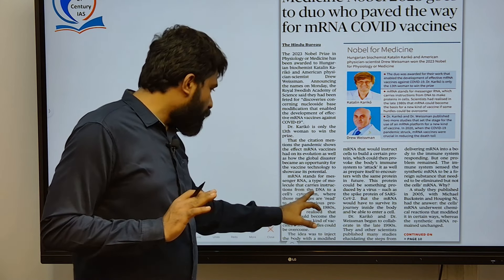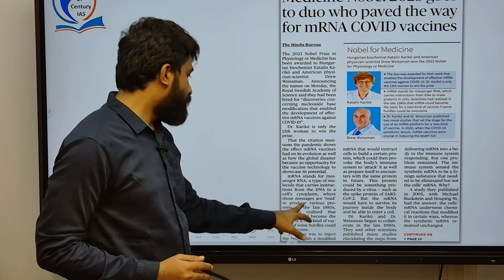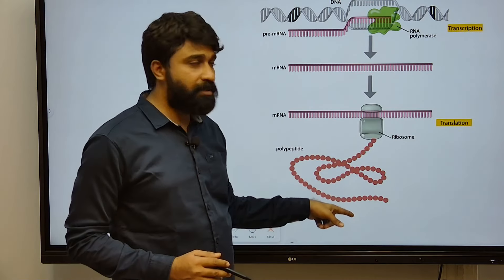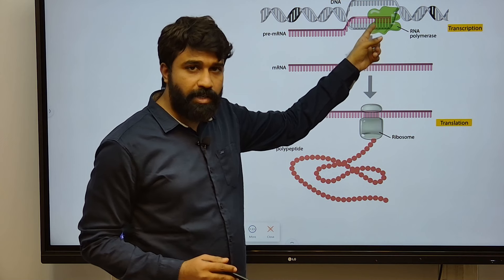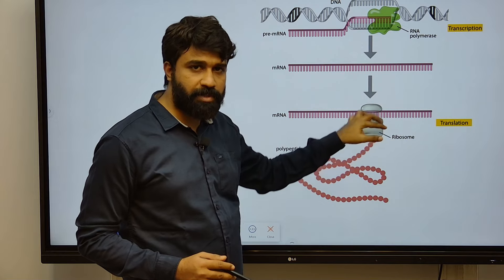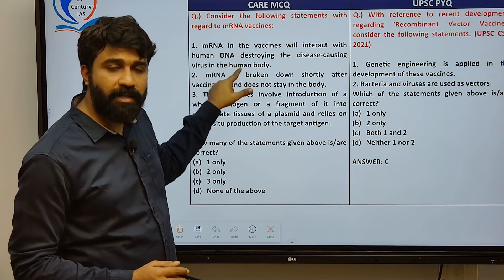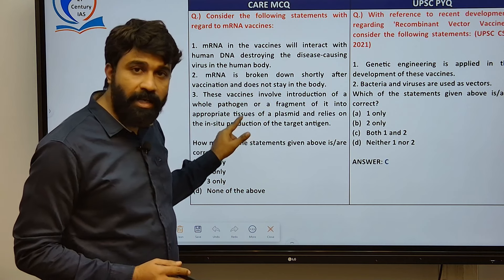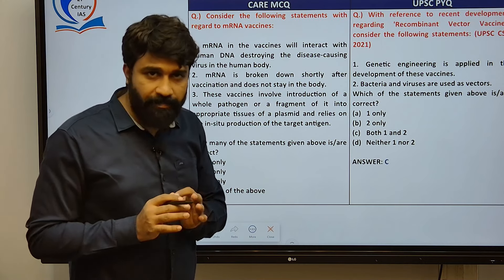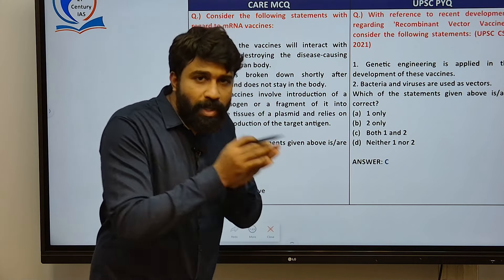mRNA is a type of molecule that carries instructions from DNA to the cell's cytoplasm, where proteins are actually synthesized. mRNA only carries the instruction given by the DNA; it does not modify human DNA. The instruction code carried by this mRNA to the ribosome is replaced by the modified nucleoside modification — the code carried by the mRNA to the ribosome.